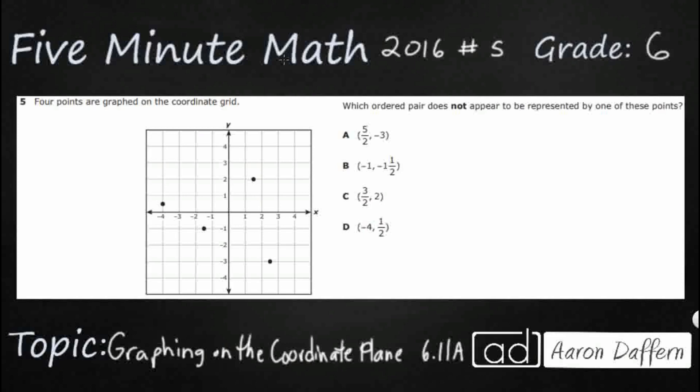So we have four coordinates on the grid and only three of them show up here in A, B, C, or D. We need to find the one that does not appear and that's going to be our answer, which one does not appear.